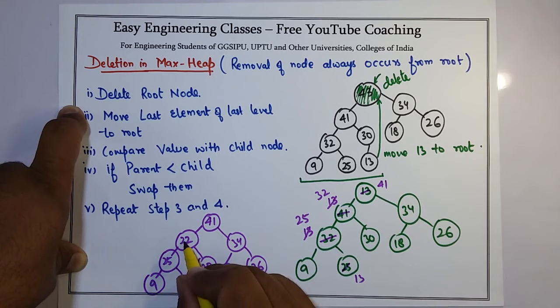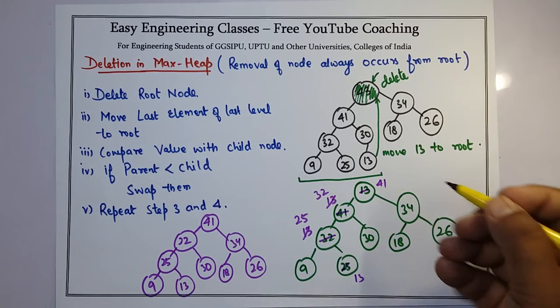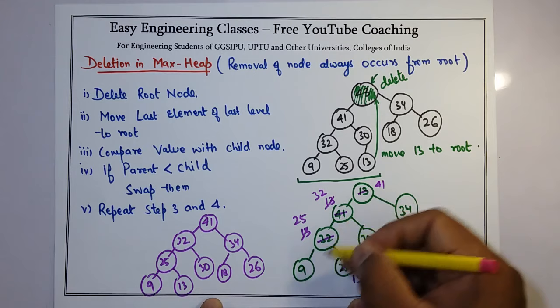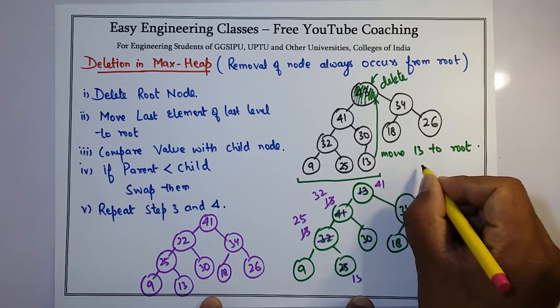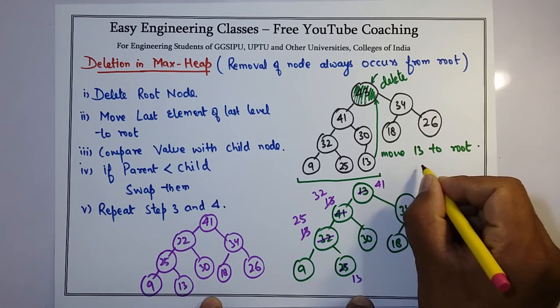In this way, you can delete a node from max heap. You could exchange 13 here as well instead of going this way, so it is up to you how you do the exchange. But the most important thing is max heap property should be present; that is, root node should be greater than its child.